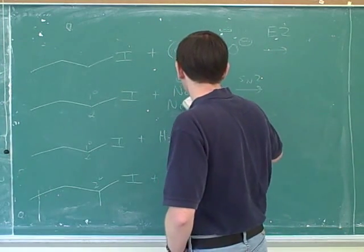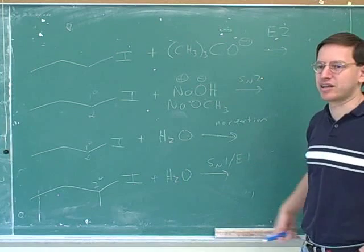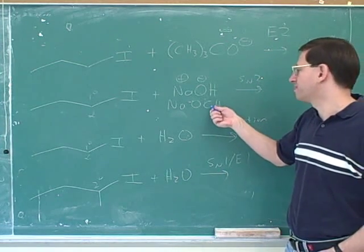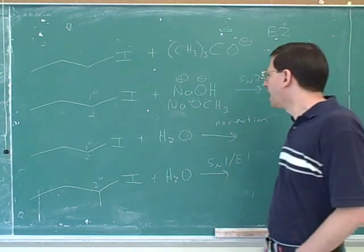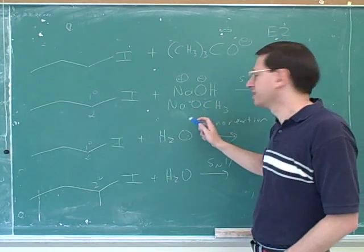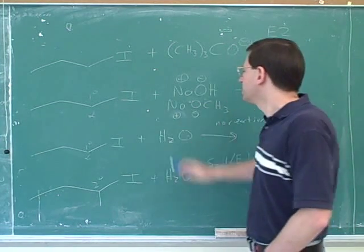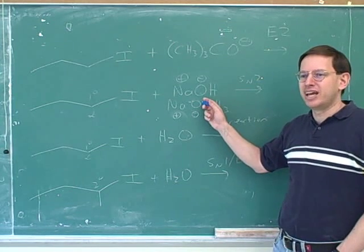Suppose we didn't use sodium hydroxide here. Suppose we used sodium methoxide. Let's talk that through. So this would be sodium methoxide. Instead of having a hydrogen here, I put a methyl group. Well, this would still have a negative charge, right?